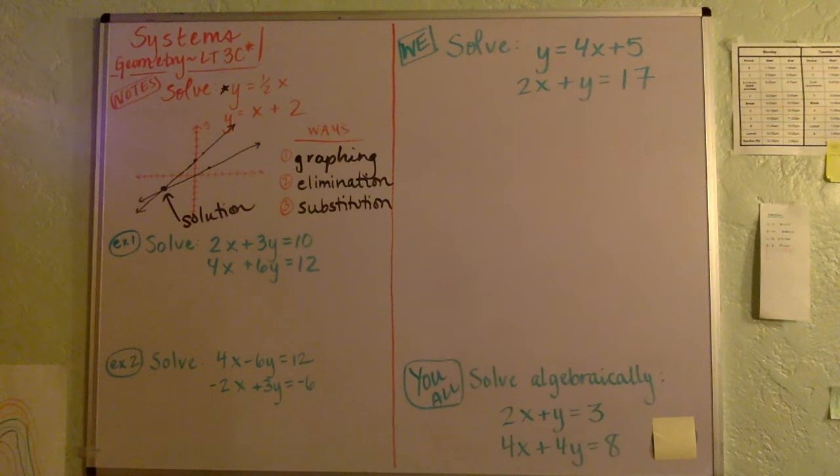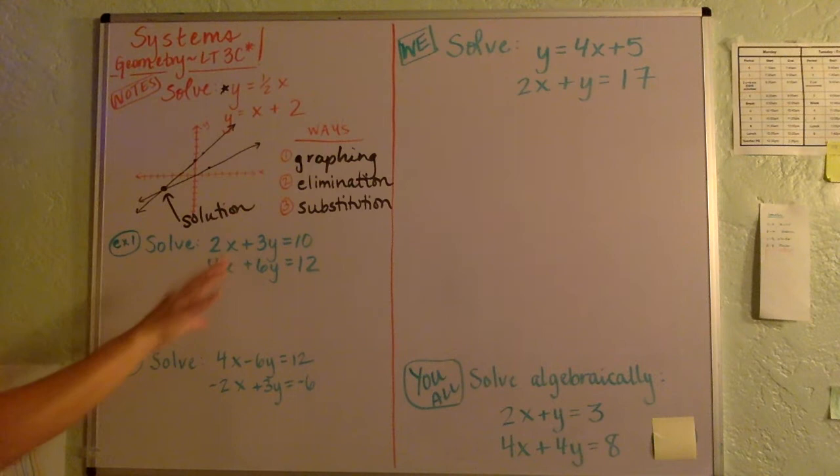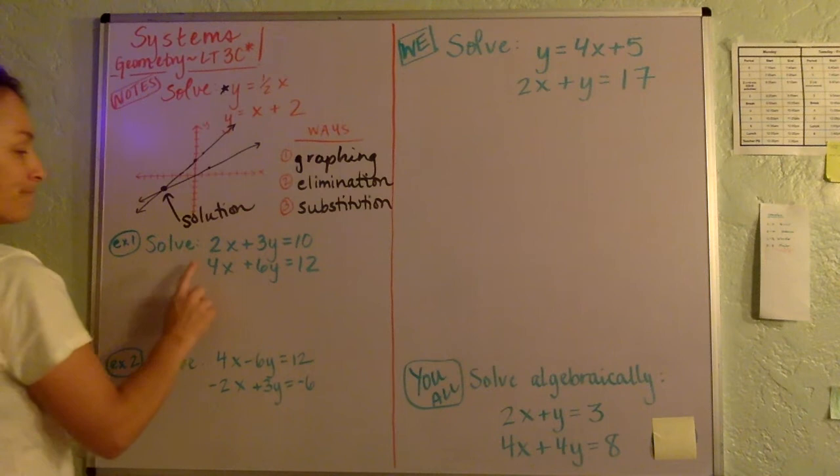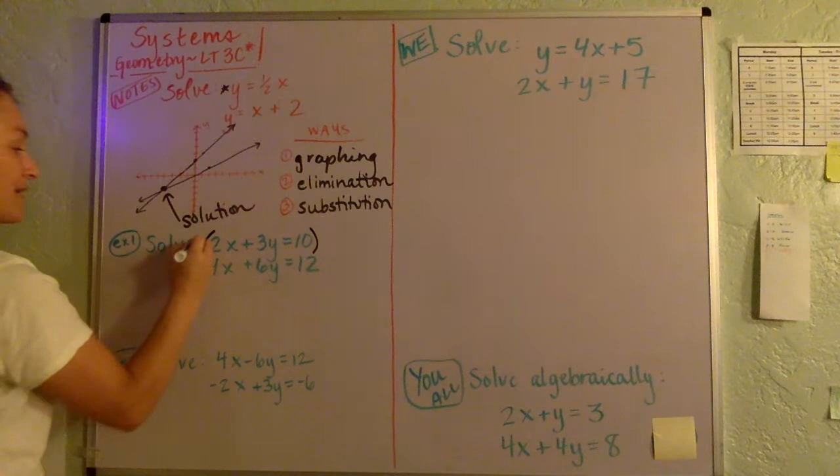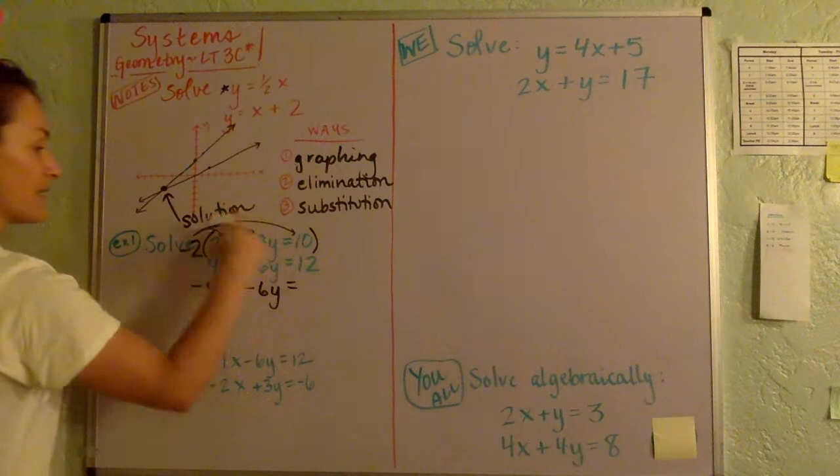And so with elimination, so these two ways are algebraic ways. With these two, you want to take a look at the system, and you want to add the two equations together so that one of the variables cancel. So I think I'm going to try and get the X's to cancel. So I'm going to multiply the whole top equation by negative 2. And so when I do that, we're going to get negative 4X minus 6Y equals negative 20.